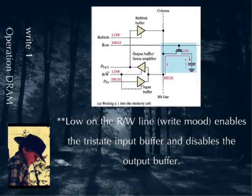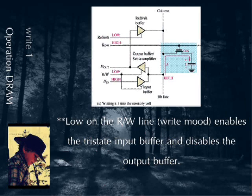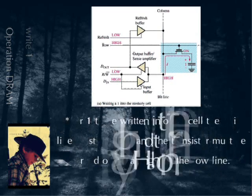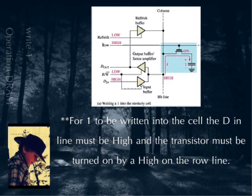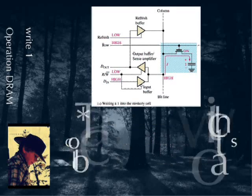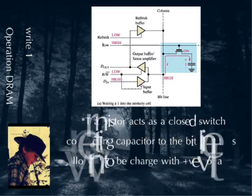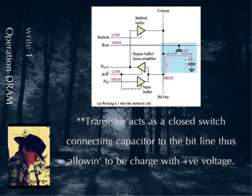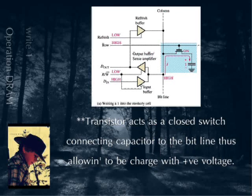When the RW line is low, write mode enables the tri-state input buffer and disables the output buffer. For a 1 to be written into the cell, the DIN line must be high and the transistor must be turned on by a high on the row line.